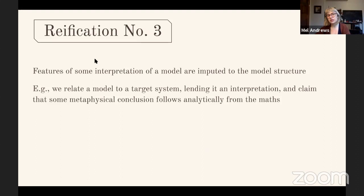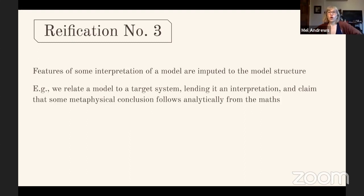The third type of reification involves taking features of an interpretation of a model and confusing that with the structure. We might relate a model to a target system, lend it an interpretation, and then claim that some metaphysical conclusion follows analytically from the structure alone. To have philosophical, metaphysical, or theoretical conclusions, we need structure plus construal — structure plus interpretation. Math alone does not get us metaphysics; it doesn't get us ontology alone. It needs the addition of an interpretation.